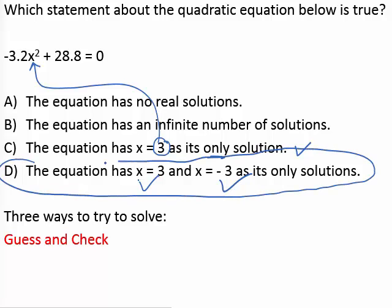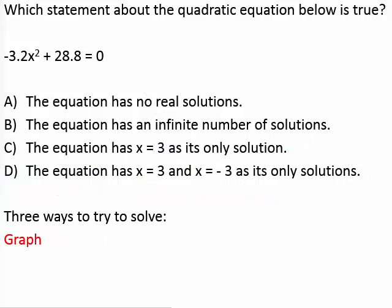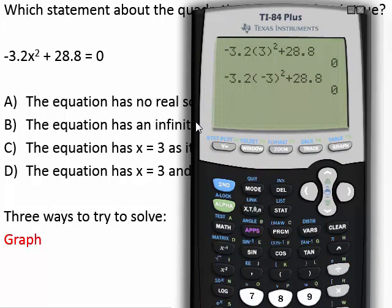Now notice I say looks like. Because one of these possible answers was has infinite number of solutions. That means could have infinitely many solutions. So it looks like d is it. But we can't be 100% for certain. So let's go ahead and check a graph to see if we can check it that way.